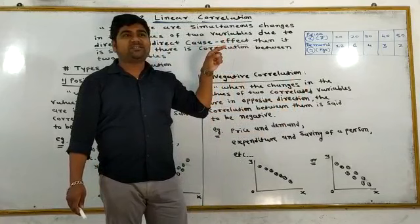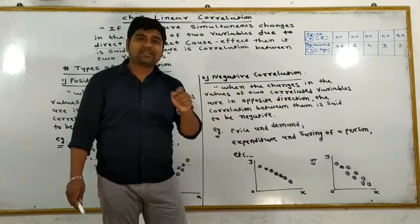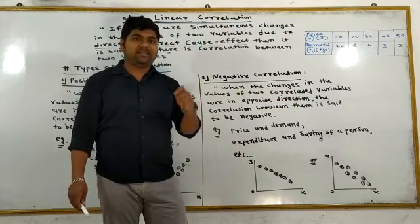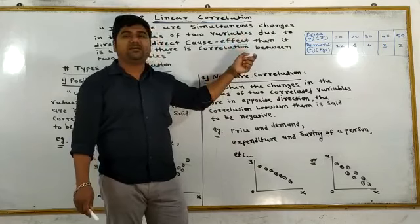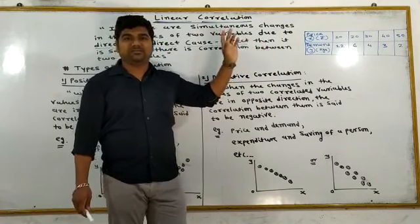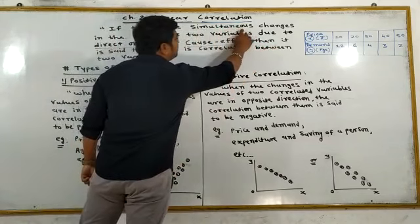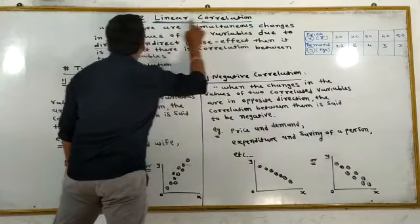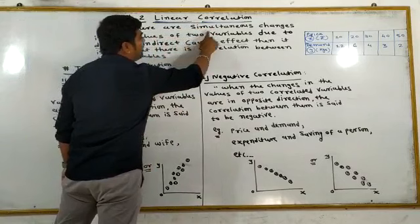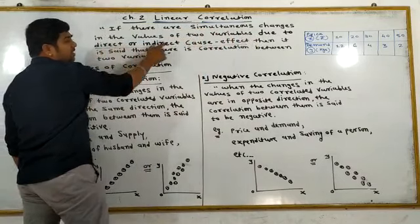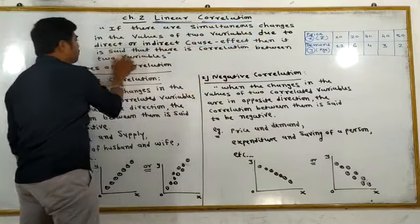Agar price me kuch bhi change ho raha hai, us changes ko kola chahiye — that relation. If there are simultaneously changes in the values of two variables due to some direct reason, it is said that there is a correlation between two variables.